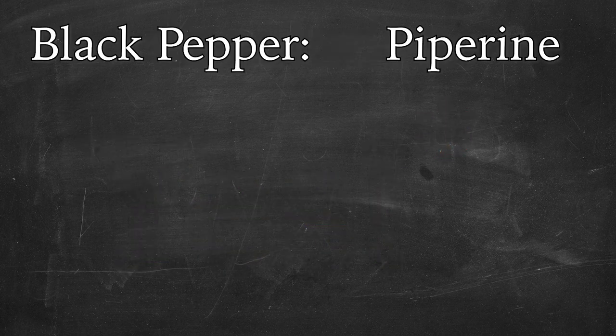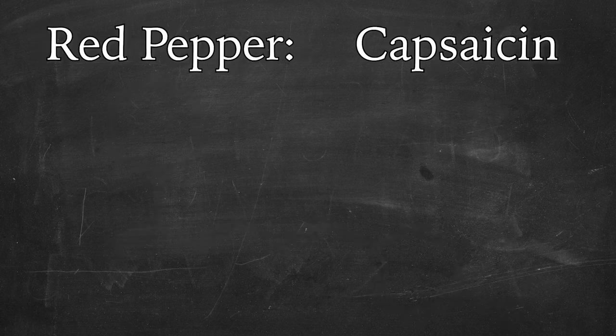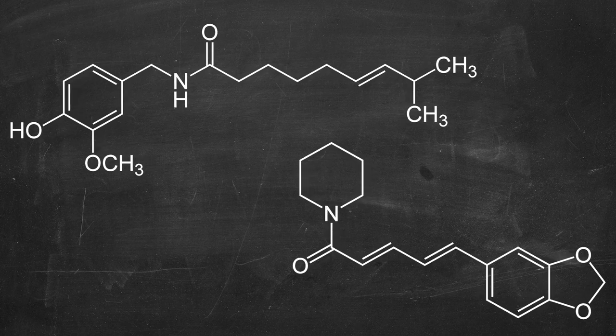The active ingredient in black peppercorns is piperine, and that looks like this. The active ingredient in crushed red pepper is capsaicin, and that looks like this. Both of these things are common food ingredients and are totally safe to eat in the amounts they traditionally are used for in that context.